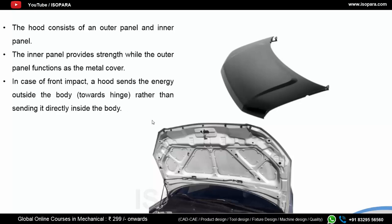There are some hinges in the inner panel — one hinge at this point and one hinge at this point. The basic function of this inner panel is to divert force towards these hinges, which is why it is constructed this way. In case of a front impact, the hood sends energy outside the body towards the hinges rather than inside the body, keeping the passengers safe.